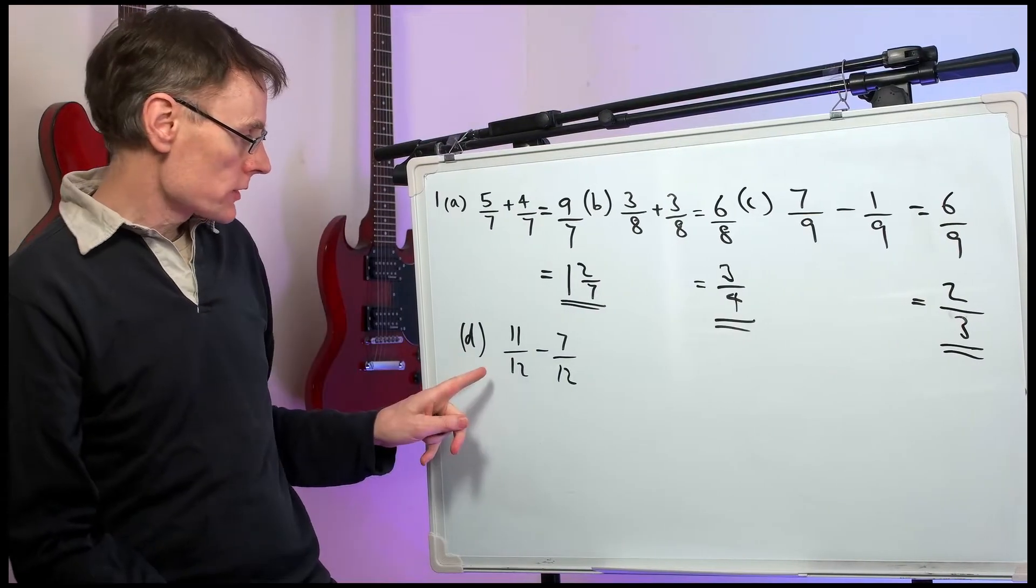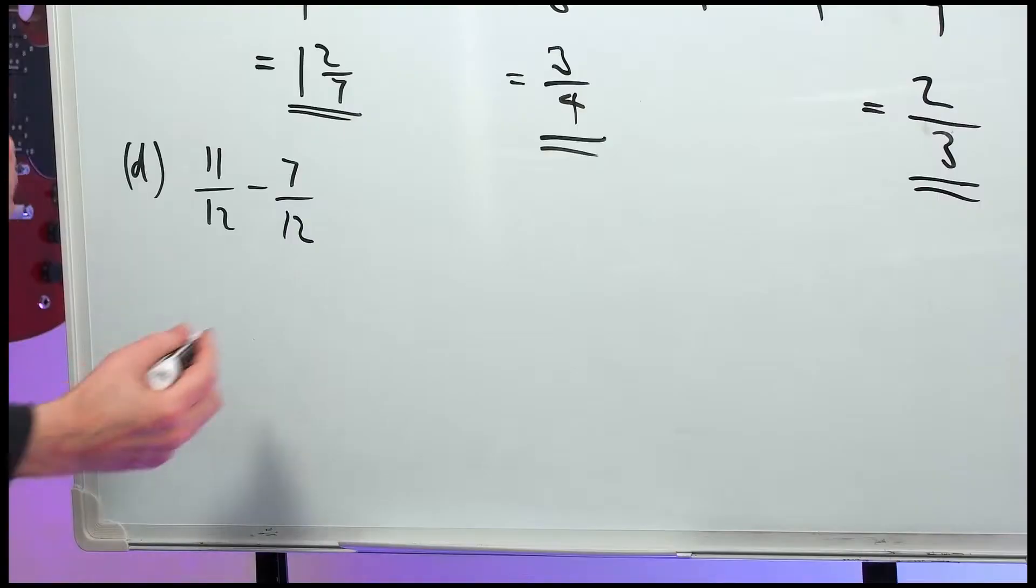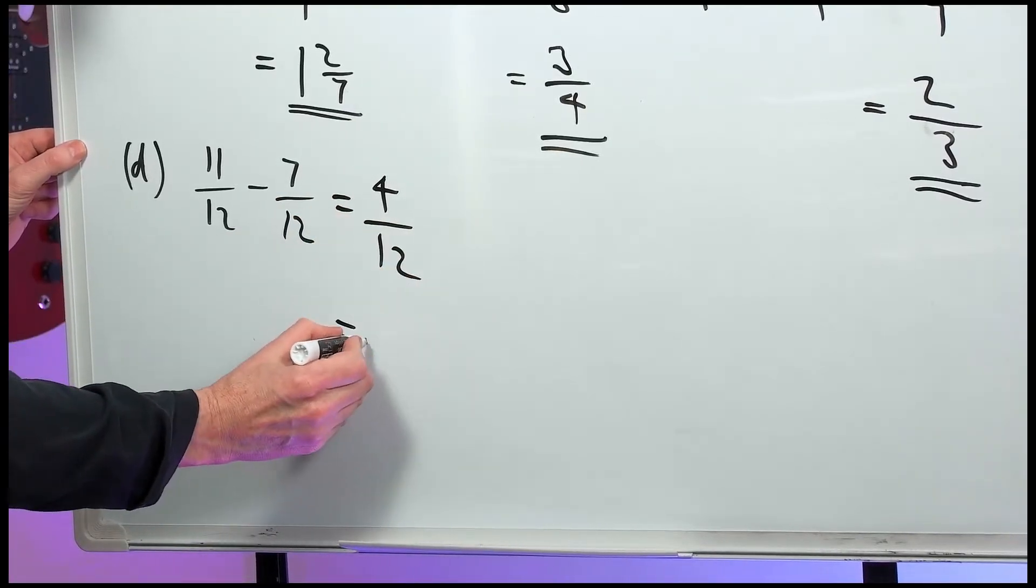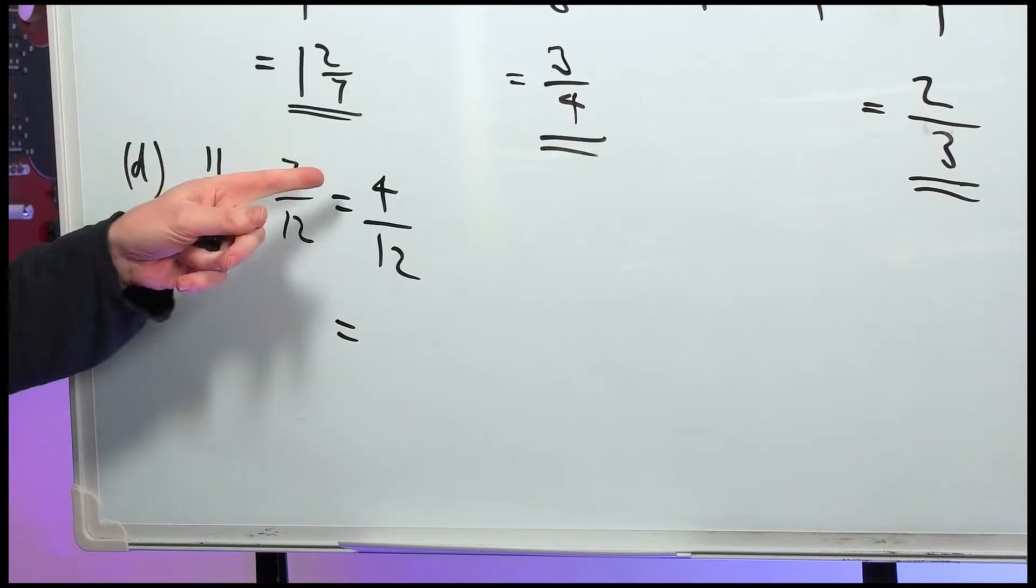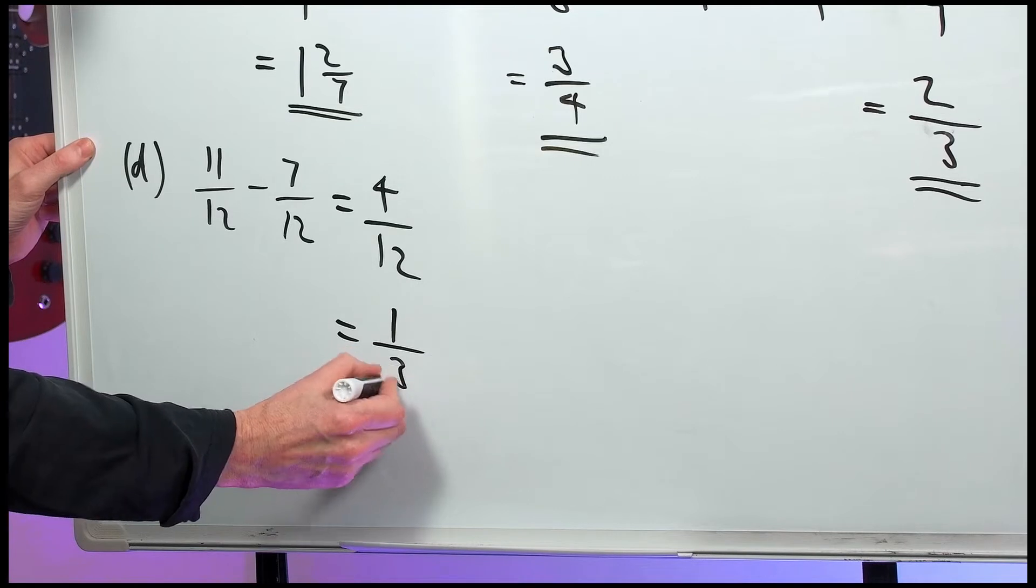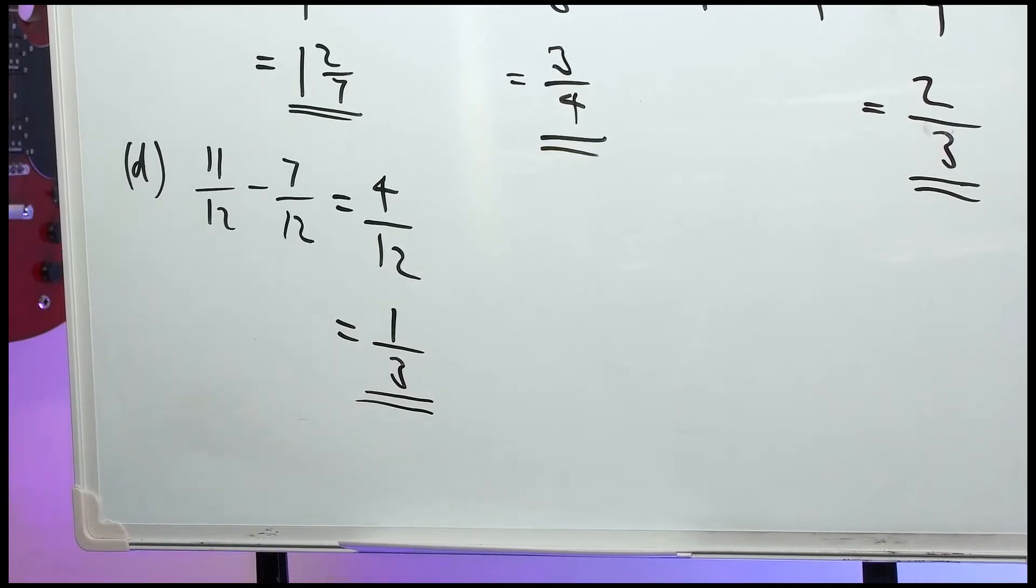Now, part D, 11 twelfths minus 7 twelfths equals 4 twelfths. Here we can divide the top and bottom by 4. 4 into 4 goes once. 4 into 12 goes 3 times, 1 third.